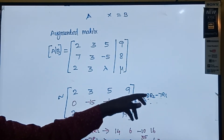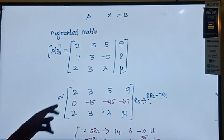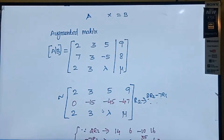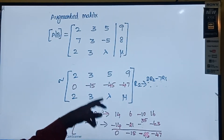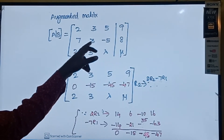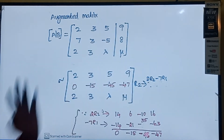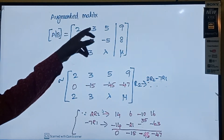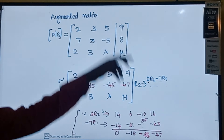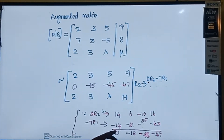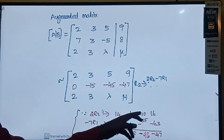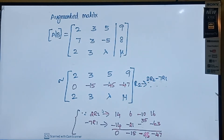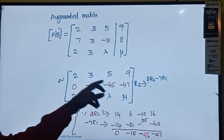R2 → 2R2 - 7R1. So 2R2 means 2×7=14, 2×3=6, 2×(-5)=-10, 2×8=16. And -7R1 gives -7×2=-14, -7×3=-21, -7×5=-35, -7×9=-63. So: -14+14=0, 6-21=-15, -10-35=-45, 16-63=-47. Writing the new R2: [0, -15, -45, -47].